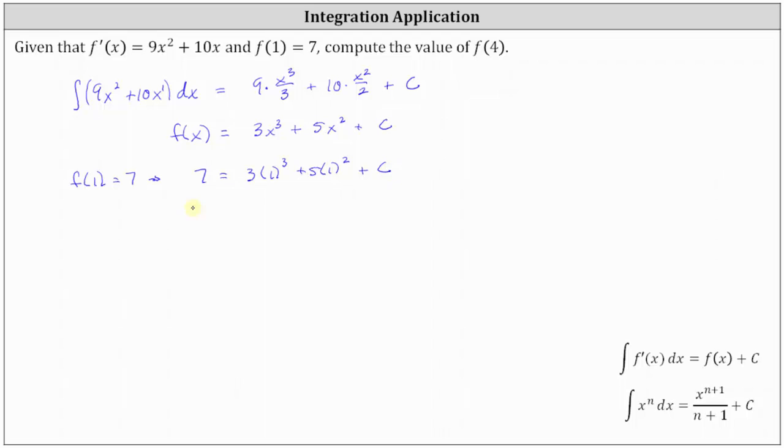And now we solve for c. We have 7 equals, the cube of 1 is 1, 3 times 1 is 3, plus the square of 1 is 1, 5 times 1 is 5. Simplifying, we have 7 = 8 + c.